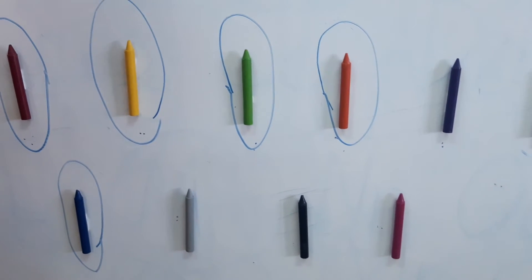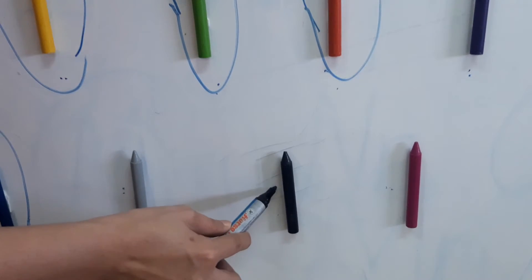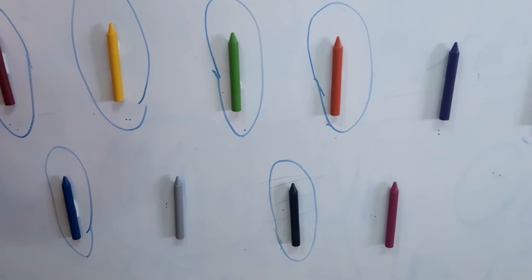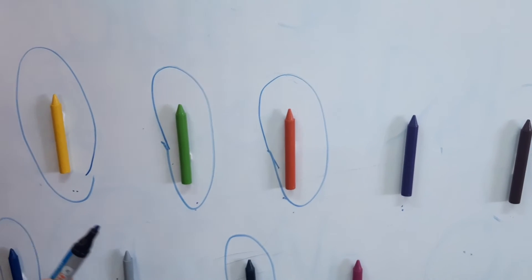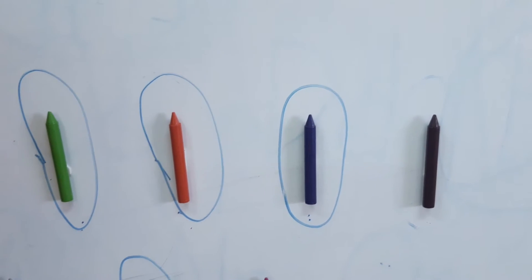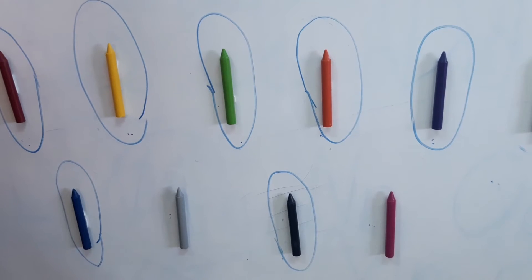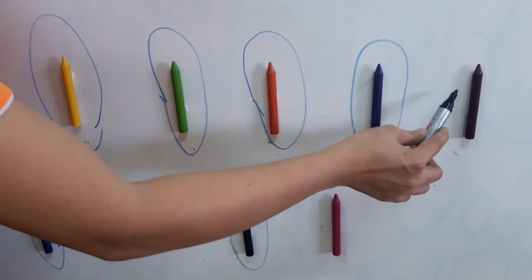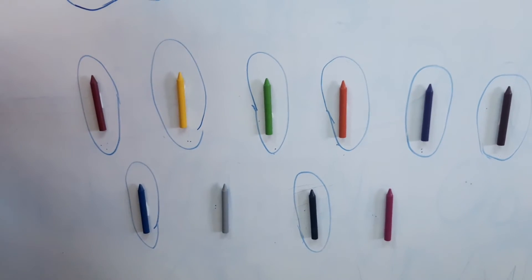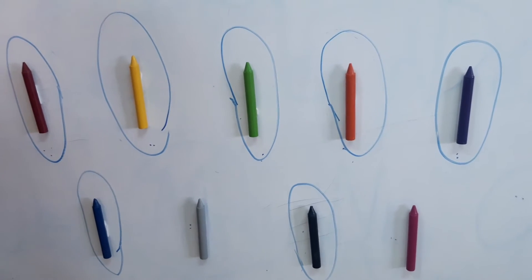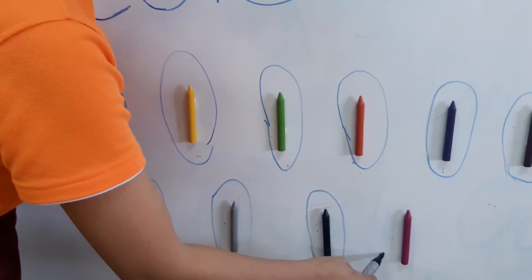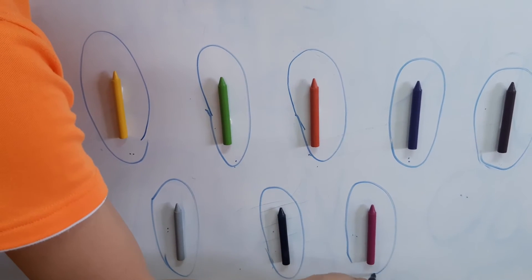What about black? Can you find the color black? Here. Okay. What about purple? Where is the color purple? Or violet? Here. Okay. Very good. Next, where is the color brown? Brown. Where is the brown? Here. Good job. And where is the color gray? Gray. Here. Okay. And the last one. This is color pink. Okay. Pink.